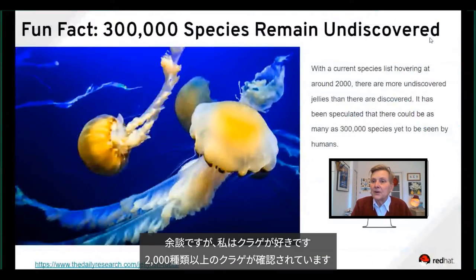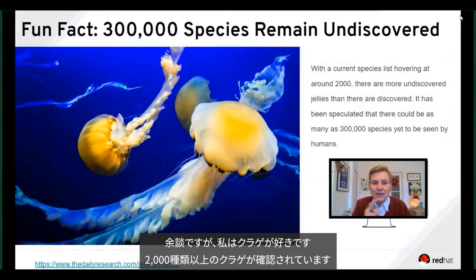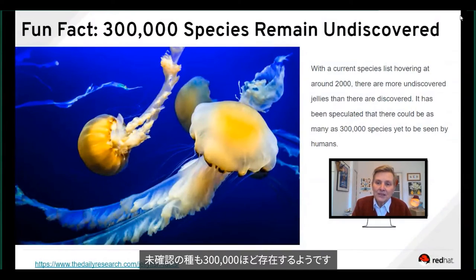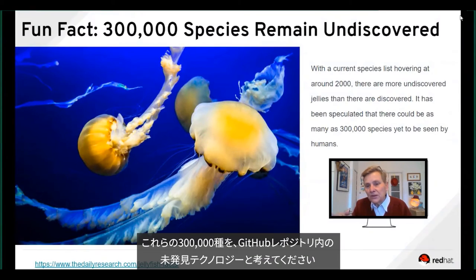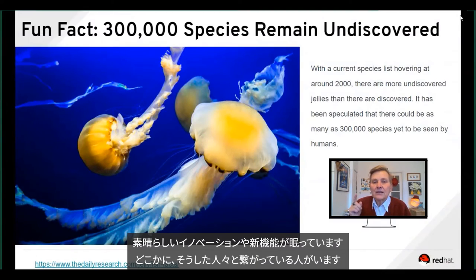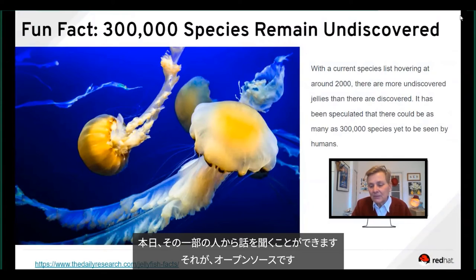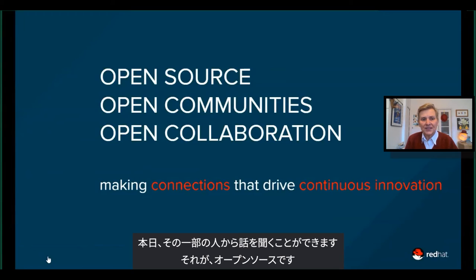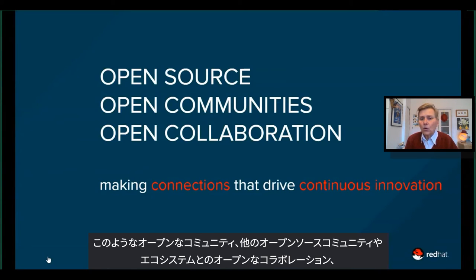Fun fact: I am a fan of jellyfish. There are a known species list of 2,000 jellyfish out there, and it's been speculated that there are as many as 300,000 species that have yet to be seen by the human eye. Think of those undiscovered species as those bazillion GitHub repos that have yet to be seen by folks — all out there having some cool innovation, some new aspect. Somewhere there is someone connected to each of those. Today we're going to hear about some of them, because really, it's all about open source and open communities like this one and open collaboration.